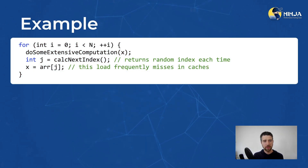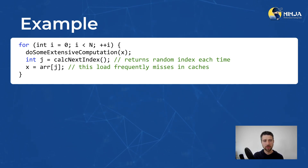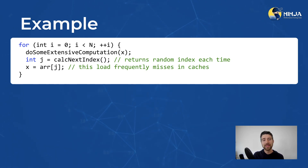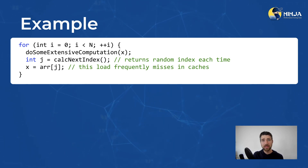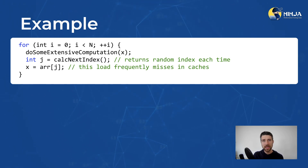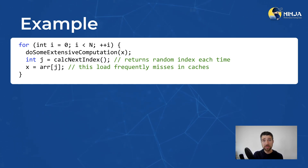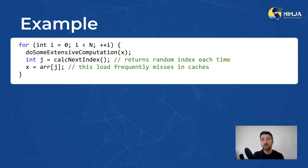Now let's take a look at this example here. Suppose we have this loop where on each iteration, we do some extensive computations and then we calculate the next index, which essentially returns a random value every time. And then we load the value from the array R based on that index. But this load will frequently miss in cache because the index is random. Hardware prefetching is helpless here because the memory access pattern is essentially random and hardware cannot pull the required data ahead of time.